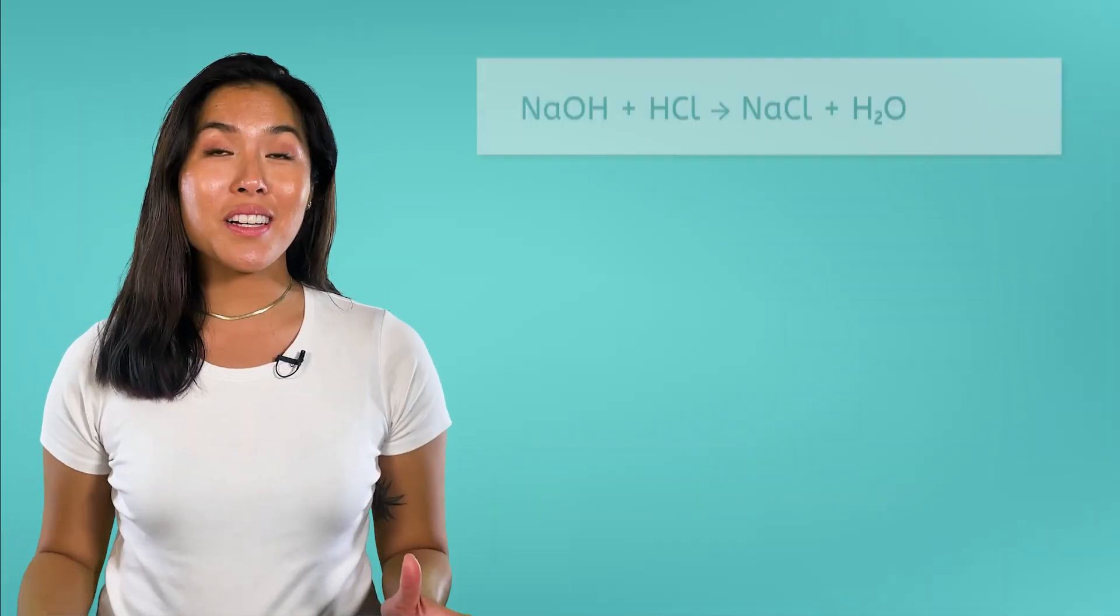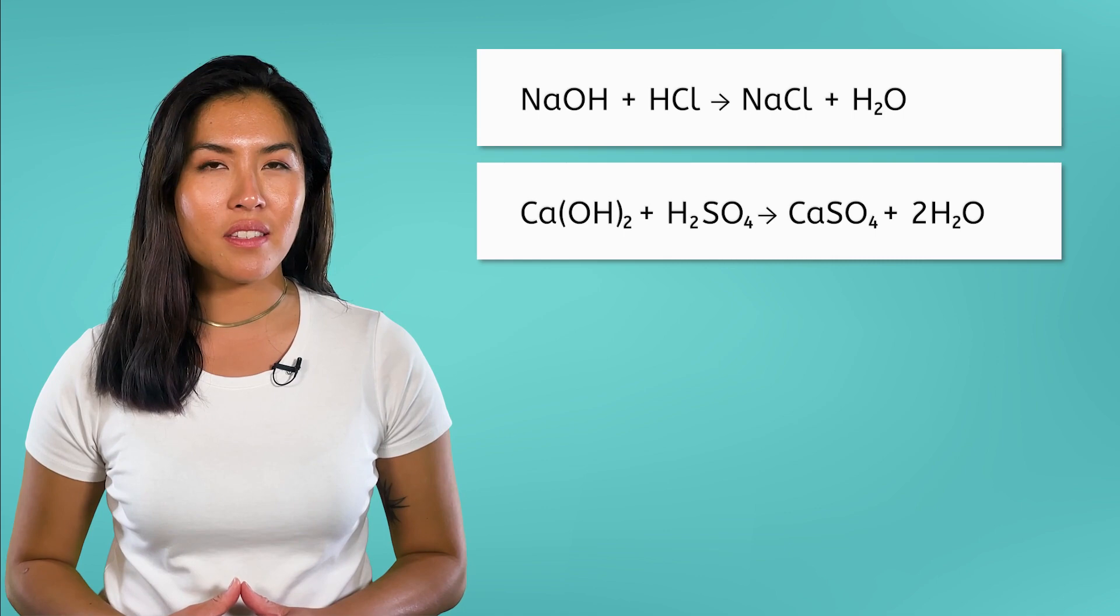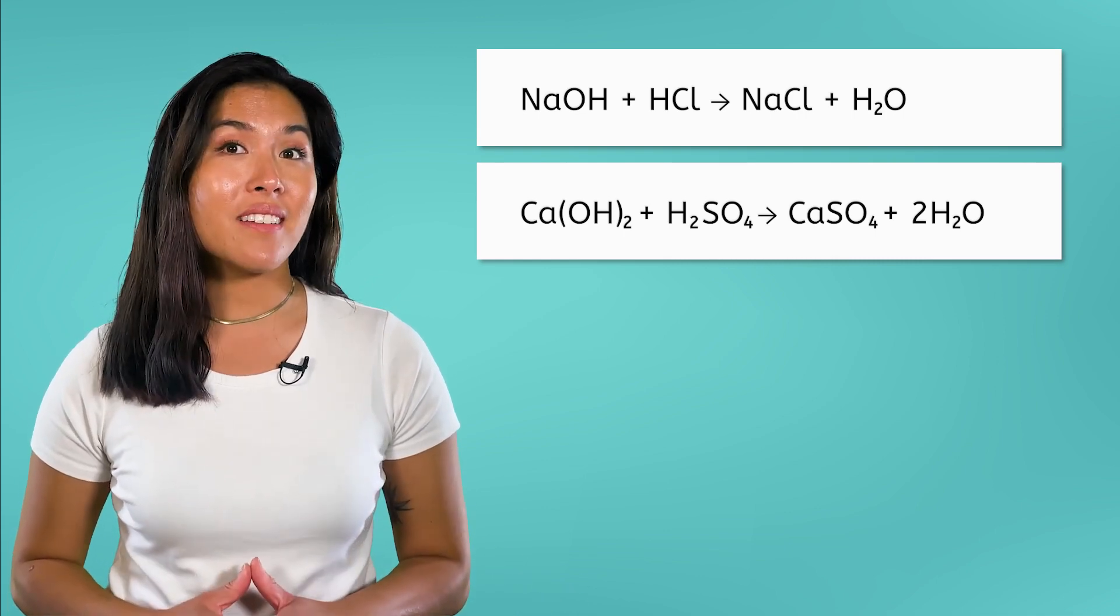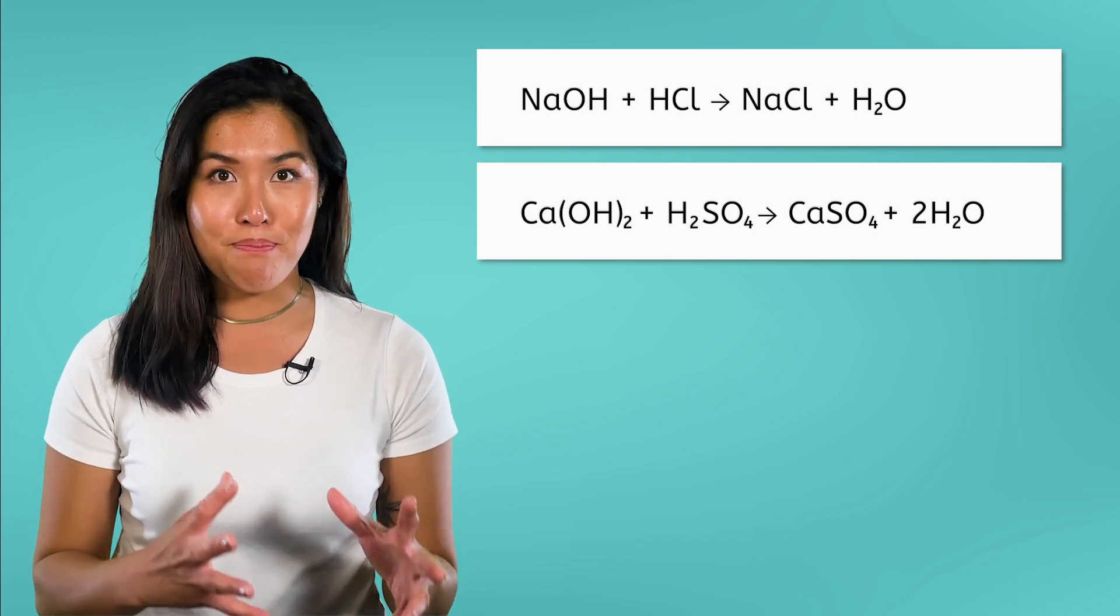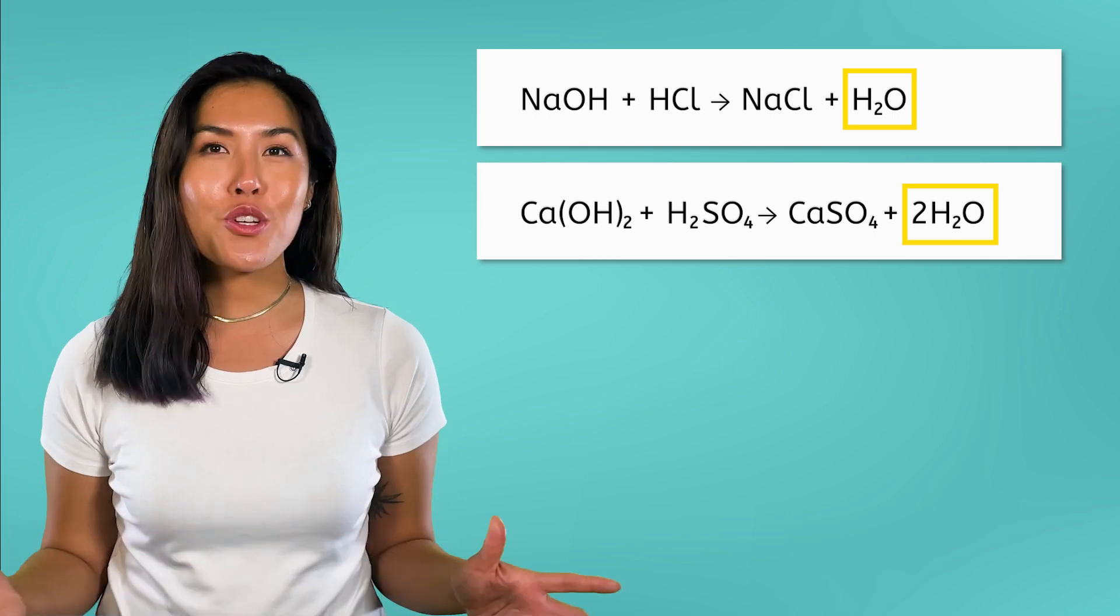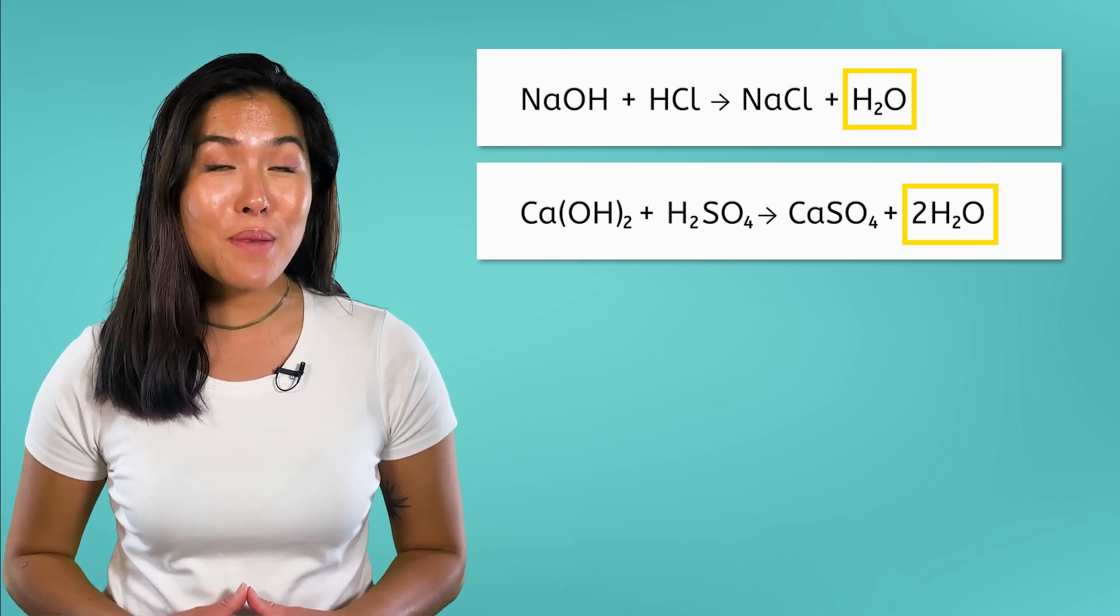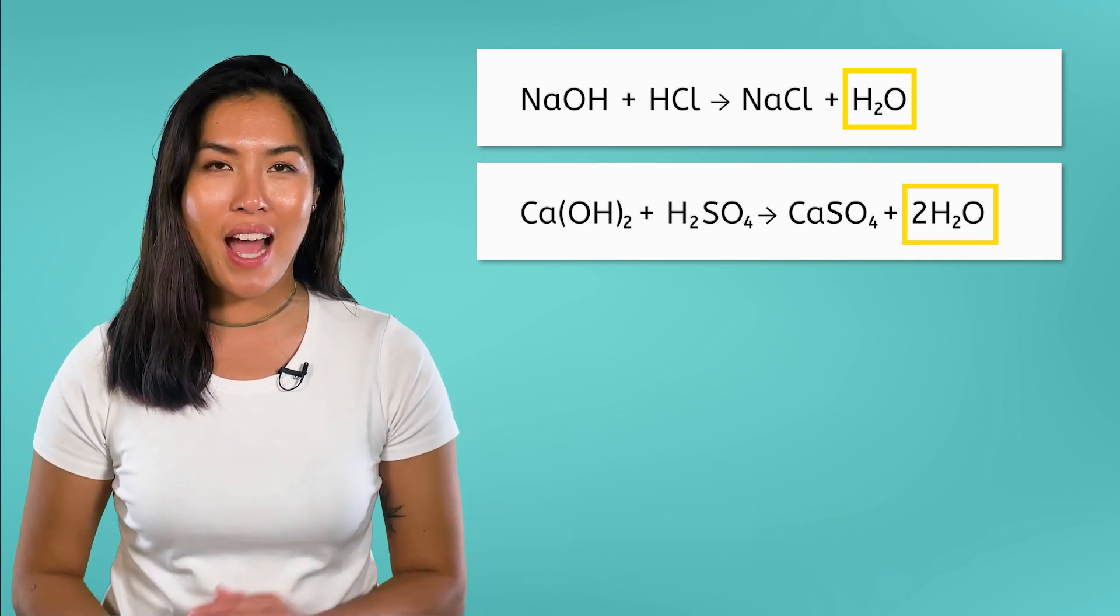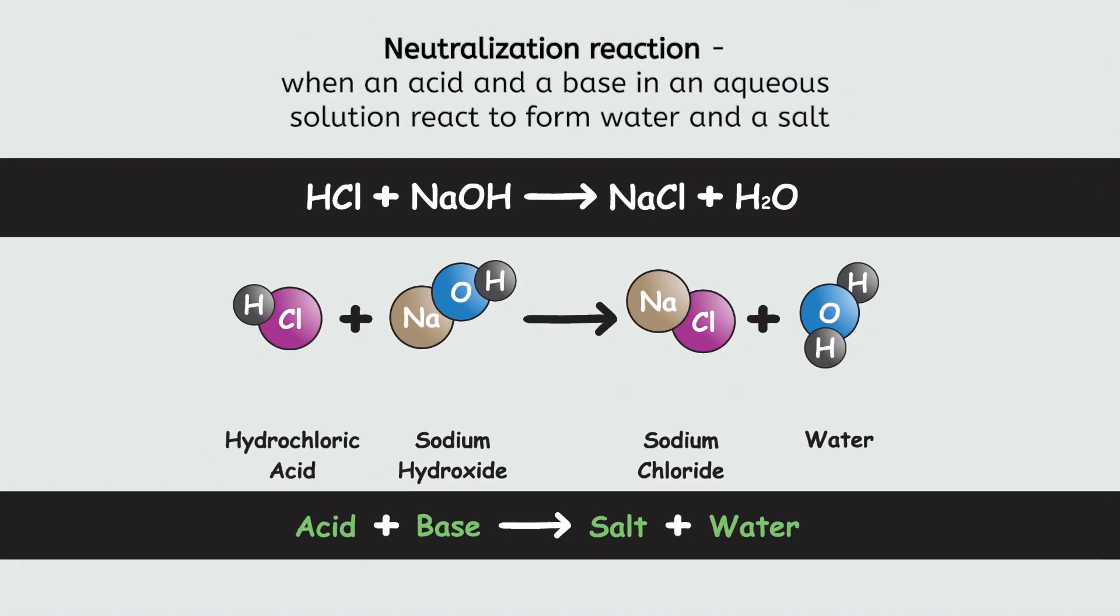I want you to look at these two double displacement reactions. What do you notice? They both have one reactant that is an acid and one reactant that is a base, and they both produce water. These two reactions are a specific type of double displacement reaction called a neutralization reaction. A neutralization reaction occurs when an acid and a base in an aqueous solution react to form water and a salt.